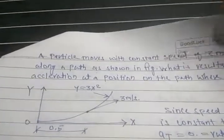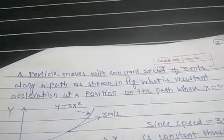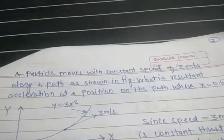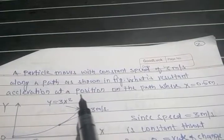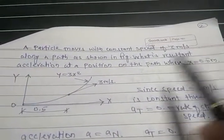Hello students, let us see two more examples on curvilinear motion. A particle moves with constant speed of 3 meters per second along a path as shown in the figure. We are given that it has a constant speed of 3 meters per second. What is the resultant acceleration at a position on the path where x equals 0.5 meters?